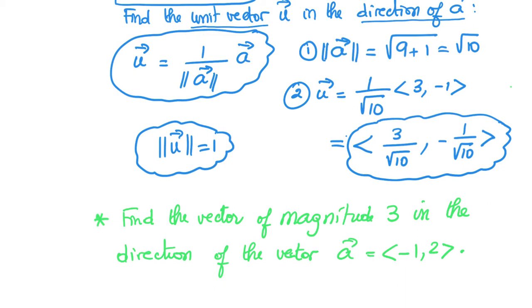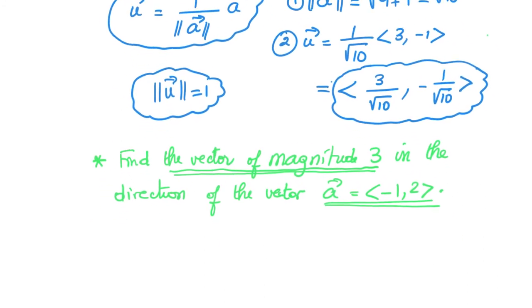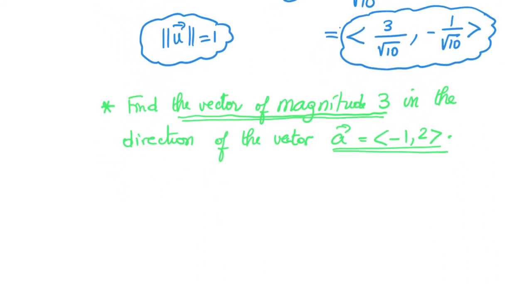The idea here is to first find the unit vector u, which we know how to do: it is 1 over the magnitude of a, multiplied by a.